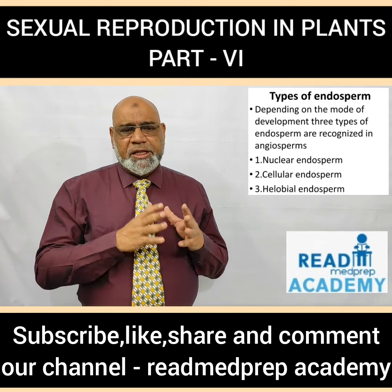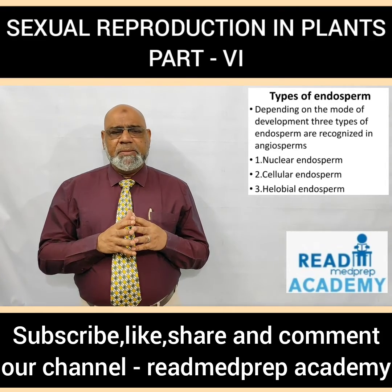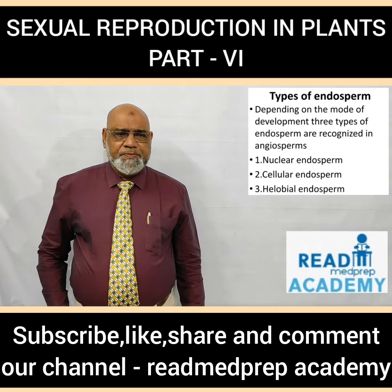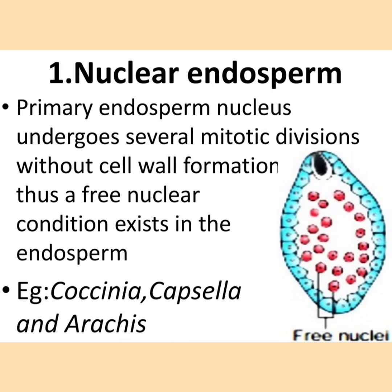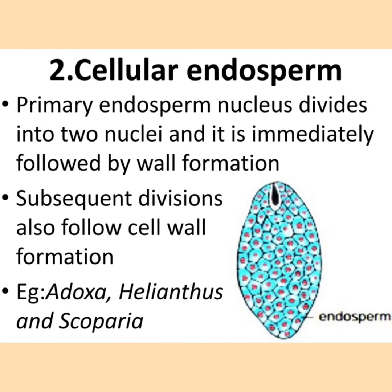In nuclear endosperm, the primary endosperm nucleus undergoes several mitotic divisions but without any cell wall formation, so a free nuclear condition exists. Examples include Coccinea, Capsella, and Arachis. In the image you can see the endosperm made up of multiple nuclei with no cell wall formation. In cellular endosperm, the nucleus divides into two and is immediately followed by cell wall formation, with subsequent multiple divisions occurring with repeated cell wall formation.